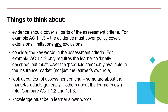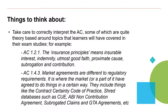These assessment criteria examples are the main ones where centres have often not quite been successful. Take care to correctly interpret the assessment criteria, some of which are quite theory-based around topics that learners will have covered in their exam studies. For example, 1.2.1 — the insurance principles means insurable interest, indemnity, utmost good faith, proximate cause, subrogation and contribution. For 1.4.3, market agreements are different to regulatory requirements; it is where the market or part of it has agreed to do things in a certain way. They include things like the contract certainty code of practice, shared databases such as QAVI, non-contribution agreements, subrogated claims and GTA agreements.